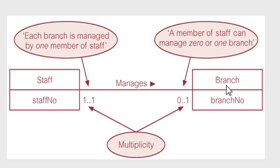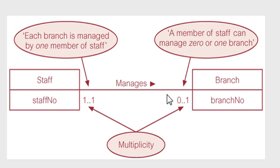So let's read it backwards. A branch is managed by exactly 1 staff member. So while a staff member can manage 0 or 1 branches — meaning a staff member may not manage any branches, or could manage 1 branch — a branch is managed by exactly 1 staff member. Every branch has to be managed by exactly 1 staff member, and that's why here it says each branch is managed by 1 member of staff.